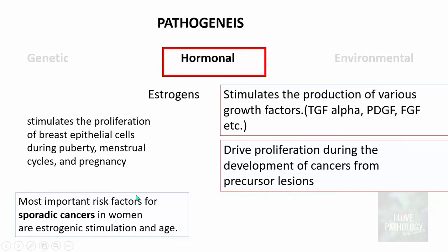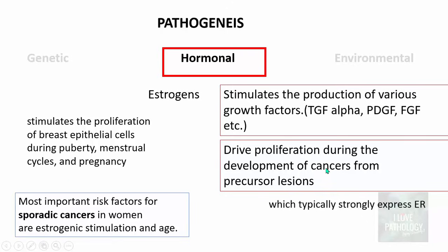When talking about sporadic cancers, the most important risk factors are estrogenic stimulation and age. Precursor lesions that strongly express the estrogen receptor are more prone to development of cancers, and these are often luminal type breast cancers.